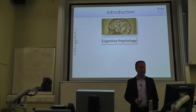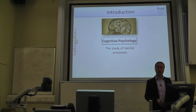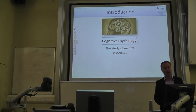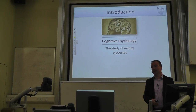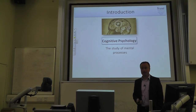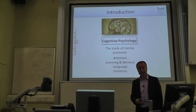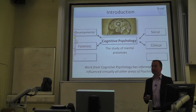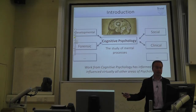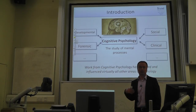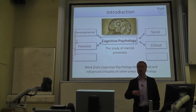The definition of cognitive psychology is the study of mental processes. If psychology is the study of mental processes and behavior, and cognitive psychology is that, then cognitive psychology is a very central point in psychology. These mental processes include attention, learning and memory, language, emotions, and many more. Because of this central role, cognitive psychology informs virtually all other areas in psychology.